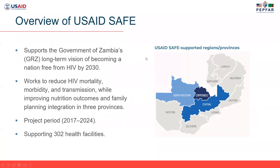The USXF project has been implemented in three regions in Zambia — the Northwestern, Copperbelt, and Central provinces, as you can see by the shaded regions on the map. The main mandate of the project is to reduce mortality, morbidity, and transmission, improve nutrition outcomes and family planning integrations in those three regions. It's initially a five-year project ending this year, with an extension going to 2024. We are currently supporting 302 health facilities in 24 districts across the three regions.